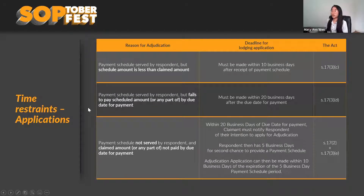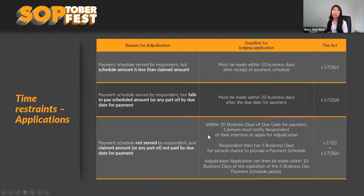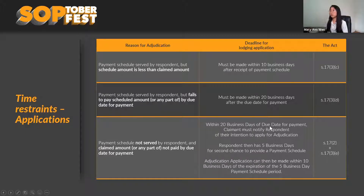Where the payment schedule has been served but the respondent has failed to pay the scheduled amount by the due date, you must make your application within 20 business days after the due date of payment. Where no payment schedule has been issued and the respondent has failed to pay, a section 17(2) notice must be issued first, giving the respondent an additional five business days to provide a payment schedule. You must issue the section 17(2) notice within 20 business days immediately following the due date for payment. After that five business days lapses, you then have an additional 10 business days to lodge your adjudication application.